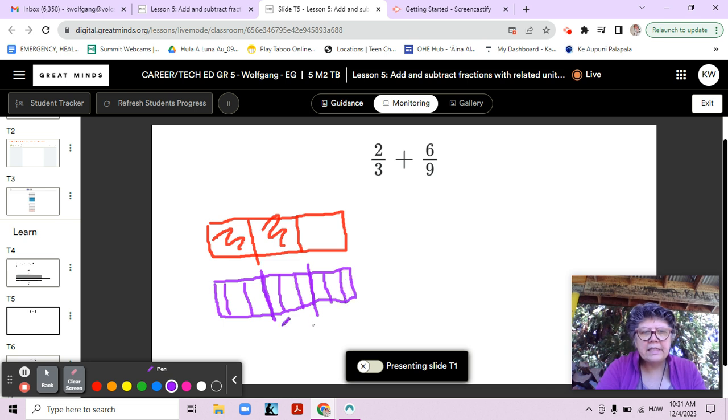Now if I have six out of nine, right? One, two, three, four, five, six. Six-ninths. Interesting.